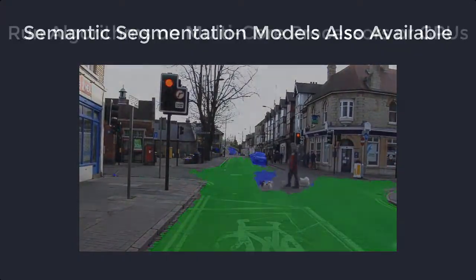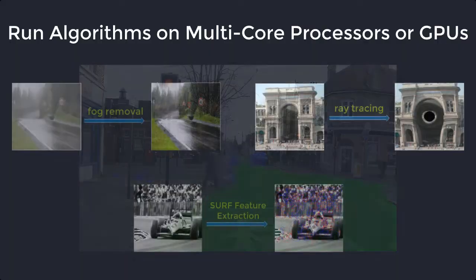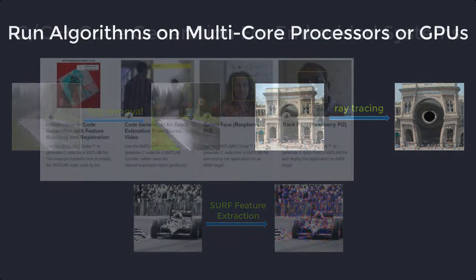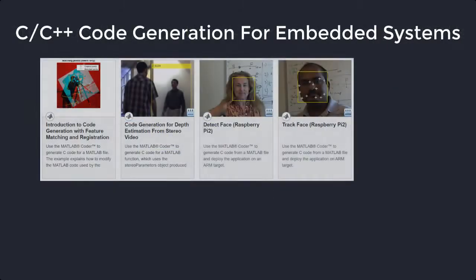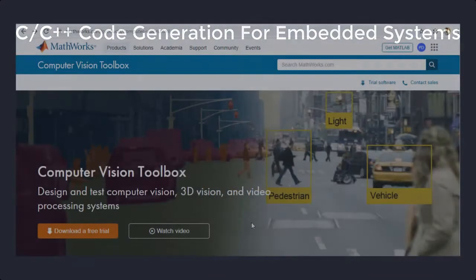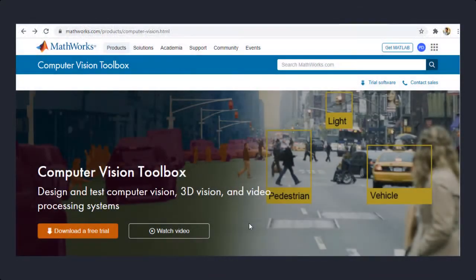All of these algorithms and more can be accelerated by running them on multi-core processors and GPUs. Most functions have support for C and C++ code generation for embedded vision system deployment. For more information about the Computer Vision Toolbox, please return to the product page.